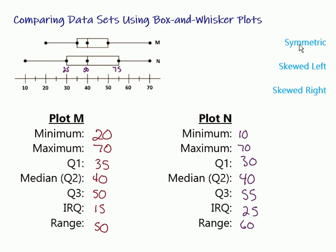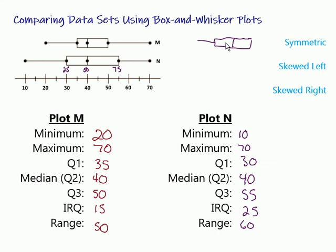The last piece I want to talk about in this video is the shape of the different graphs. Symmetric means that we can fold it in half and it would match up pretty well. If we look at this one, it's got the box on this side — there's 10 on one side and 15 on the other. Over here we've got from 55 to 70, there'd be 15 there, and 20 there. I would say that one's approximately symmetric — if we were to fold it in half, it would match up, so either side of the median is approximately the same.